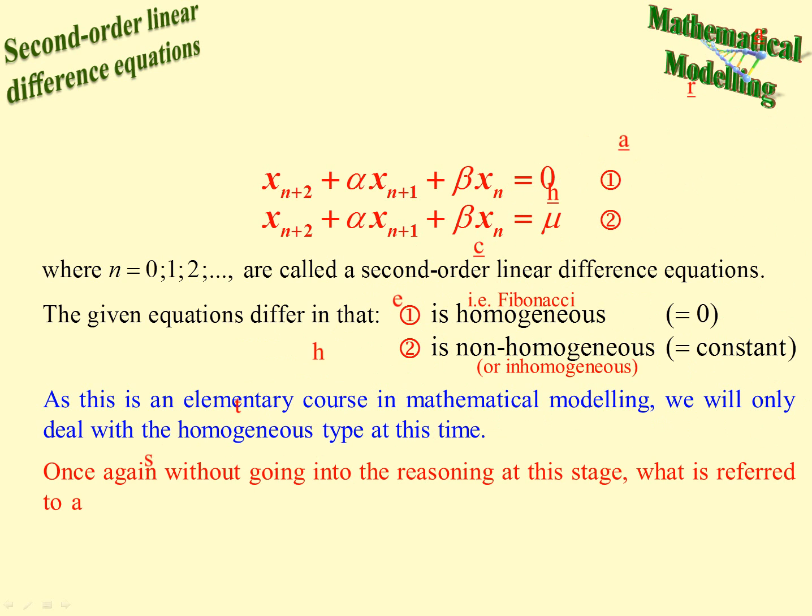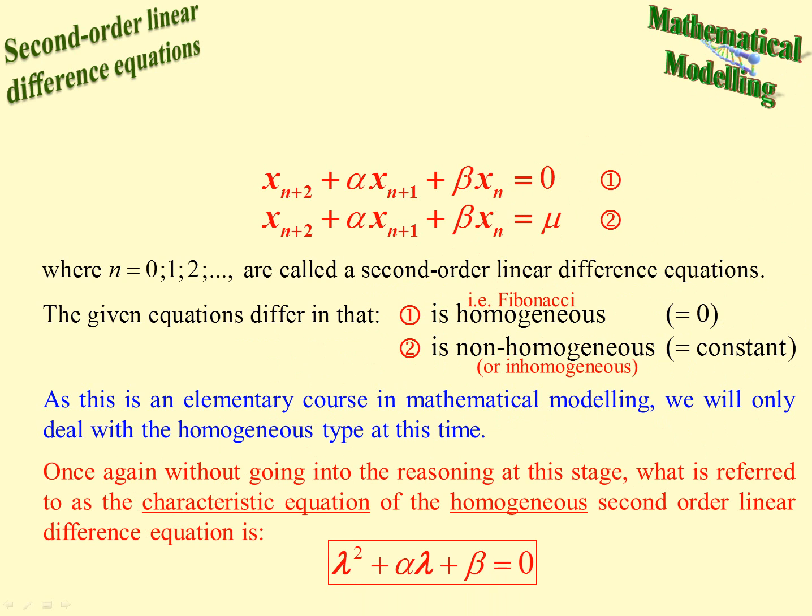So here's a formula. What is called the characteristic equation of the homogeneous second order difference equation is lambda squared plus alpha times lambda plus beta equals zero. It's a quadratic equation where alpha is the coefficient of the x sub n plus 1 term and beta is the coefficient of the x sub n term.